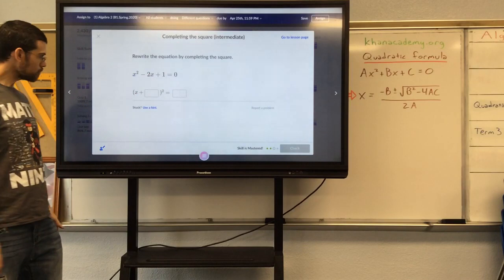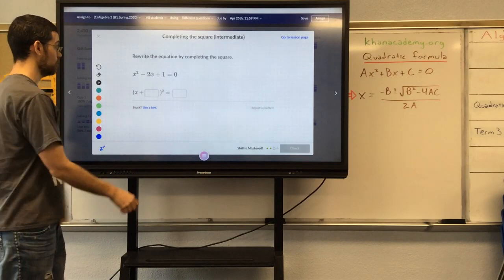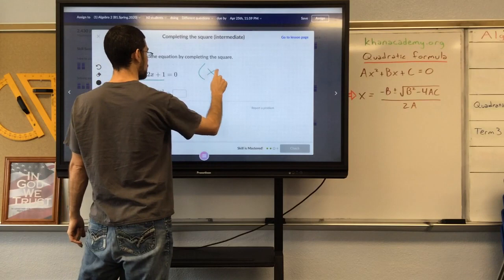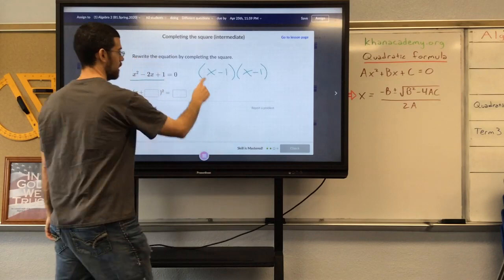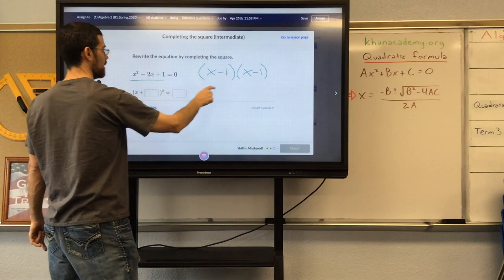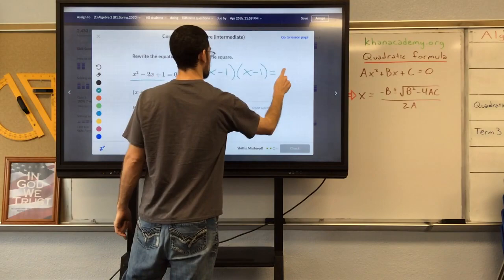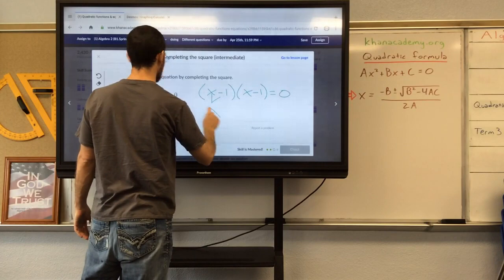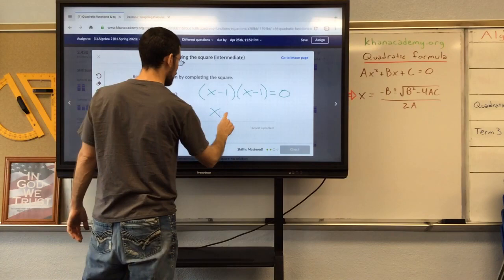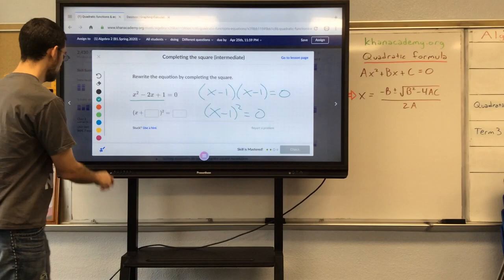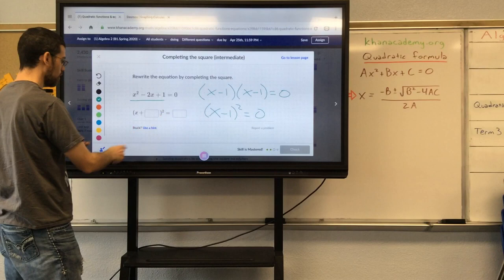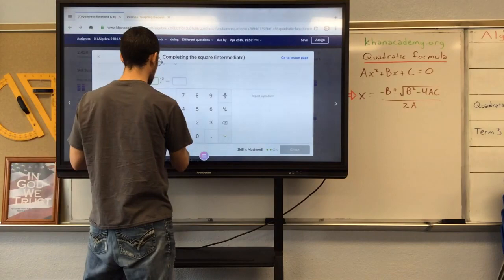Next one, x squared minus 2x plus 1 equals 0. Well, that actually already is a perfect square trinomial. This entire expression right here is a perfect square trinomial. We can write that x minus 1 times x minus 1. So x times x is x squared, negative x minus another x is negative 2x, negative 1 times negative 1 is positive 1. So this equals 0. I don't have to make any changes. So x minus 1 squared equals 0. And I have now the statement written in the form they want. So I'm putting negative 1 here and 0 there.